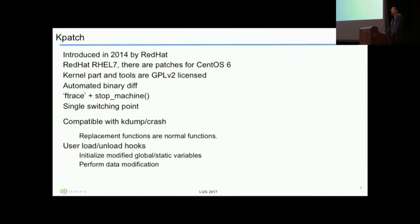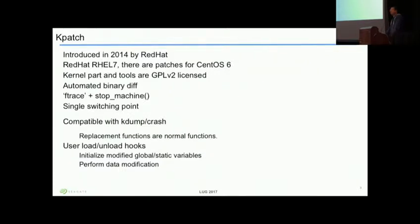K-patch technology was introduced by Red Hat in 2014. It is essentially a technology that lets you patch the running kernel immediately, and it is licensed under GPL v2. What k-patch does is use an existing kernel feature called ftrace — the compiler builds a no-op on top of it, which k-patch uses to hijack execution and return to a new function, giving the impression that the new function is running as if nothing happened.